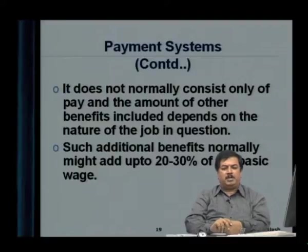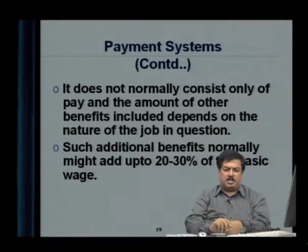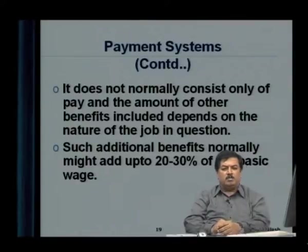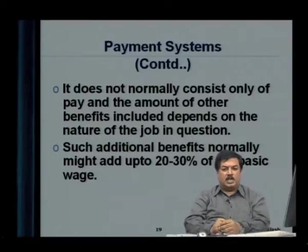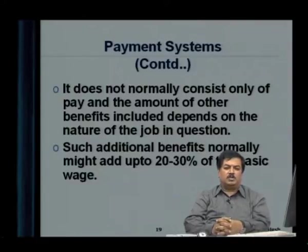Remuneration does not normally consist only of pay — it also includes other benefits depending on the nature of the job. The salary and benefits, where fringe benefits normally add up to anywhere between 20 to 30 percent of the basic wage, and in some situations can go beyond 70 to 80 percent of the basic wages. The question is what these benefits are and how much should be made available to employees. Sometimes fringe benefits are also taken as part of tax planning, but whatever the case, the question is what the right proportion should be.